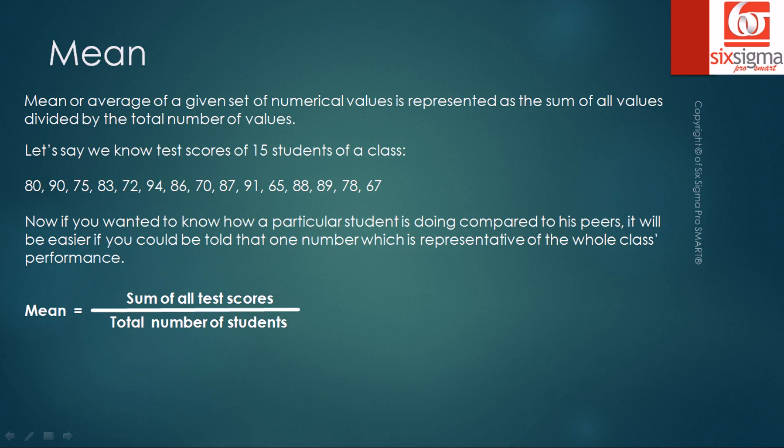Going by the definition, mean equals sum of all test scores divided by total number of students. In this case, we add up all the test scores and divide it by the total number of students, which is 15.